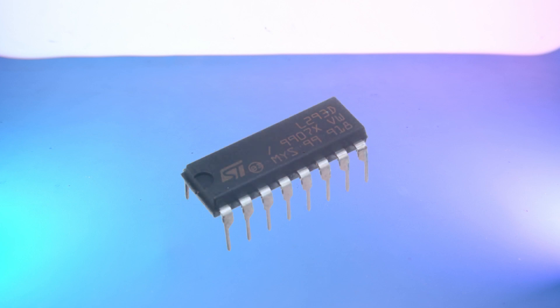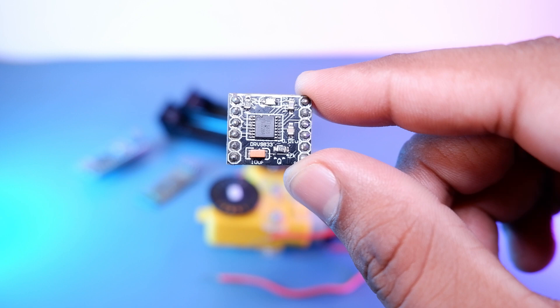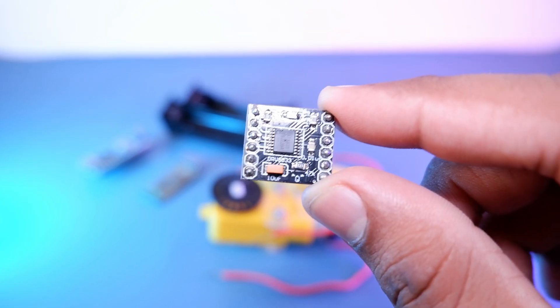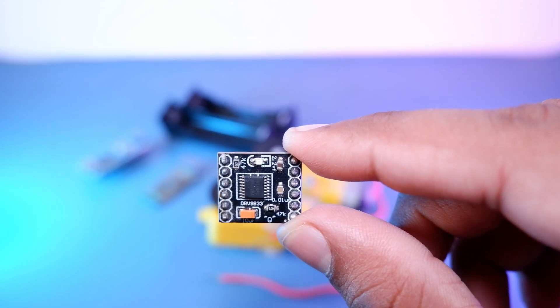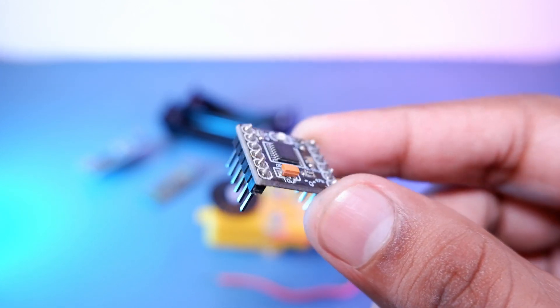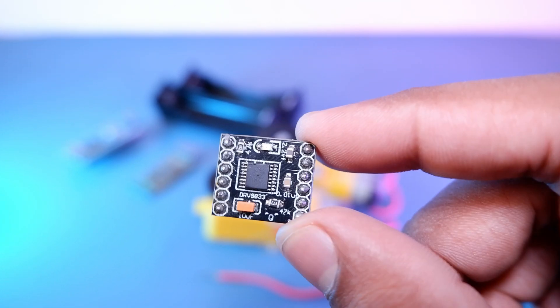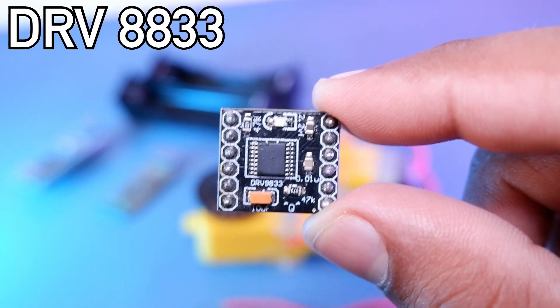So we have an option to use L293D motor driver IC. But they lack in terms of power. So that's where our DRV8833 comes into the picture. It is small, it's got pin headers and it can handle enough power to get the job done. So let's take a look at DRV8833 motor driver module.